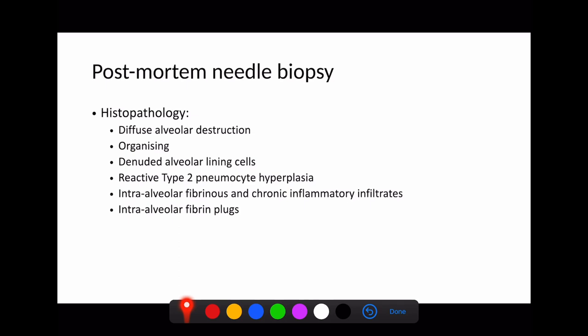There's lots of intra-alveolar fibrinous and chronic inflammatory infiltrates, and we suspect that's probably where this sort of consolidation type picture is starting to come in. And these intra-alveolar fibrin plugs, and again, that might be causing consolidation, collapse, and lack of aeration of certain areas of lung, and certainly the hepatization of lung that we see to this.